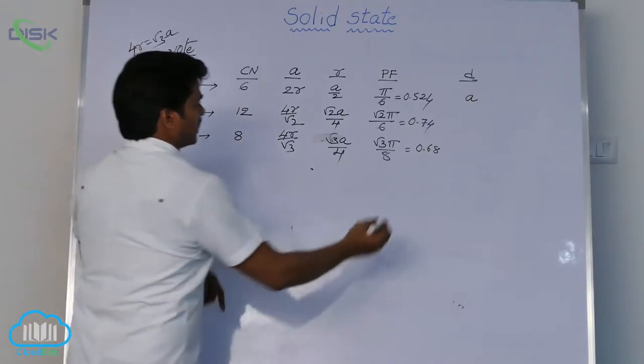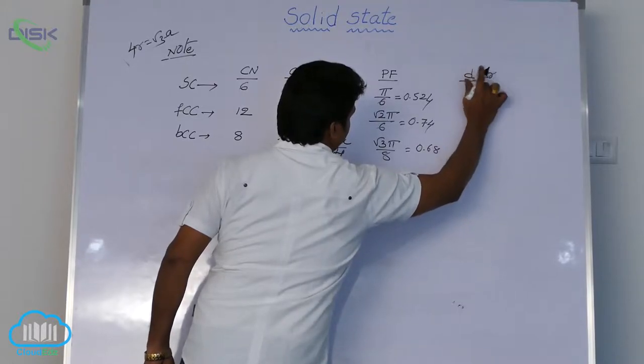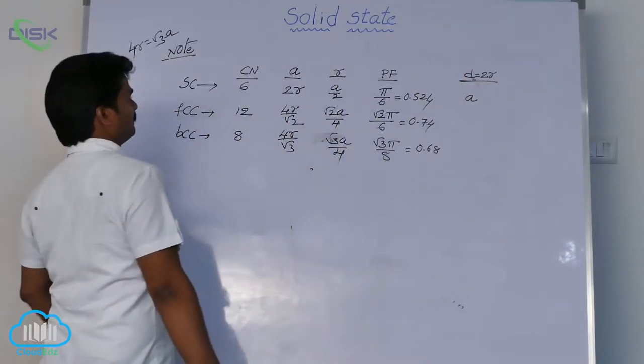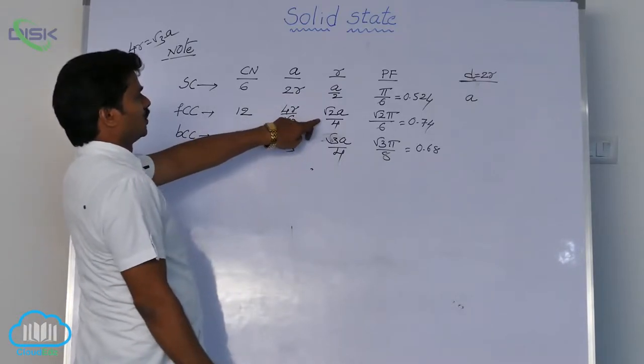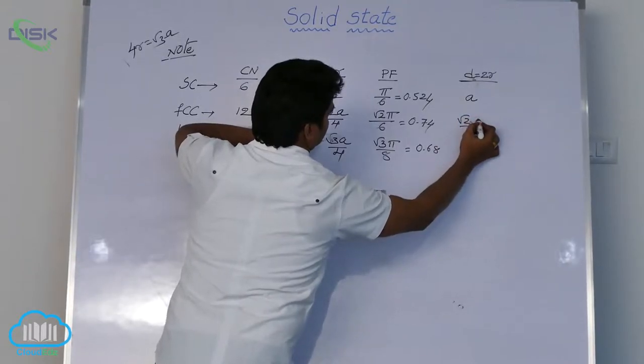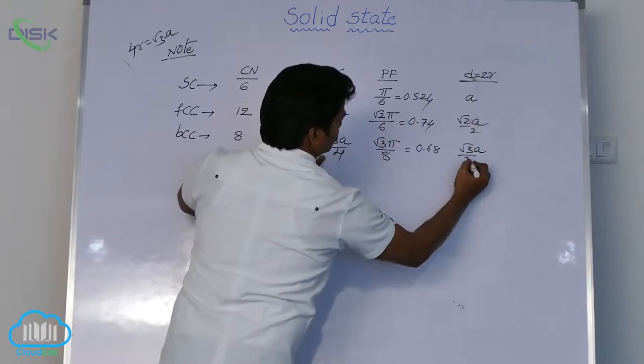Next, nearest neighbor's distance d anywhere is equal to formula 2r. So that means d is equal to 2r, edge length a. Here, 2r means √2a by 2. In BCC, 2r means √3a by 2.